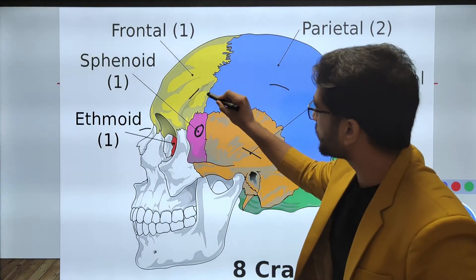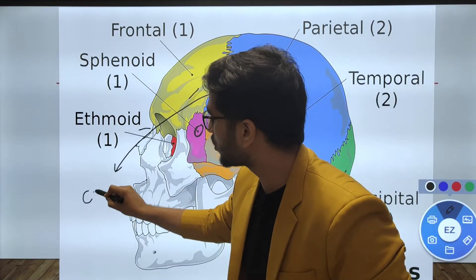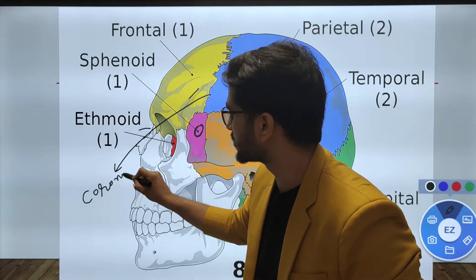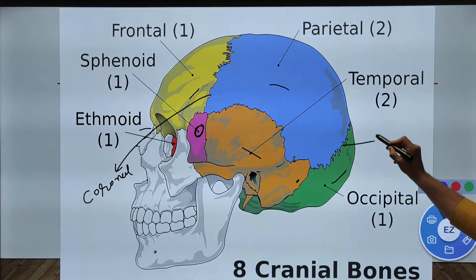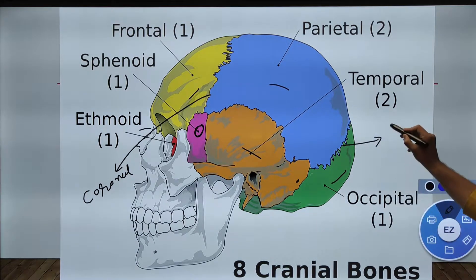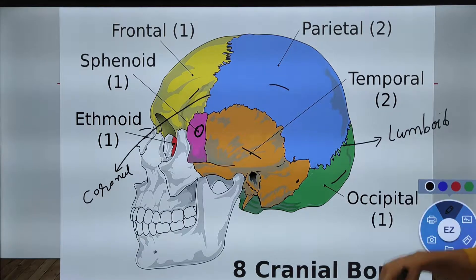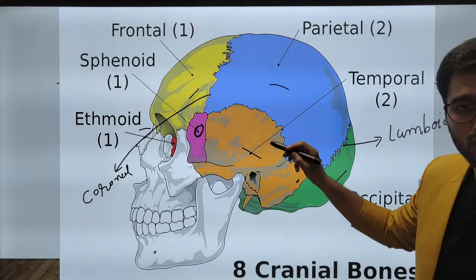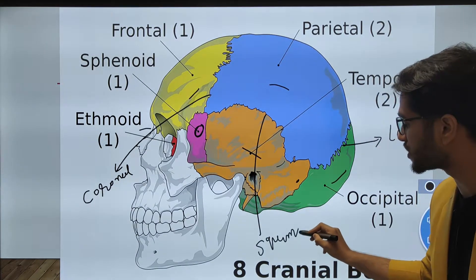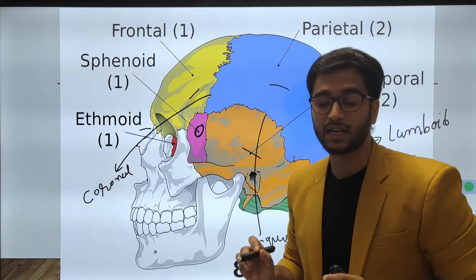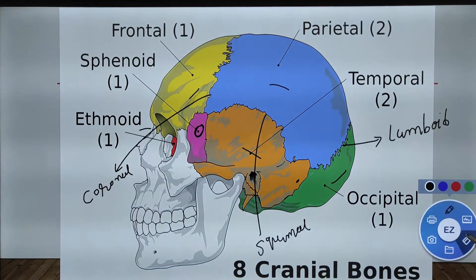The suture present between the frontal and parietal bone is known as the coronal suture. The suture between the occipital bone and parietal bone is known as the lambdoid suture. The suture between the temporal and parietal is known as the squamous suture, and the suture between the two parietal bones is known as the sagittal suture.